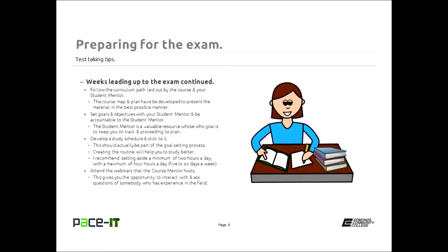Being accountable to your student mentor means that when you talk with your mentor, let them know what your goal is for the week, or work with them to establish your goal for the week, and then fulfill that goal. Be honest with your mentor and always make your appointments. The next thing you need to do to keep on track is develop a study schedule and stick to it. That should be part of your goal setting process with your student mentor.